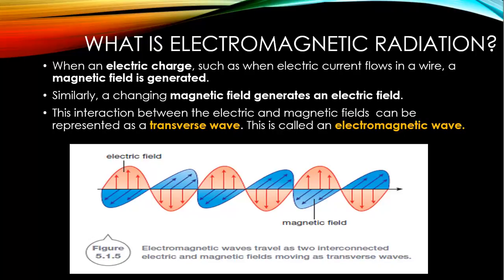When an electric charge, such as when electric current flows into a wire, a magnetic field is generated. Similarly, a changing magnetic field generates an electric field. This interaction between electric and magnetic fields can be represented as a transverse wave. This is called an electromagnetic wave. This is an illustration of what an electromagnetic wave looks like, where you've got alternating electric and magnetic fields.